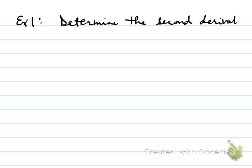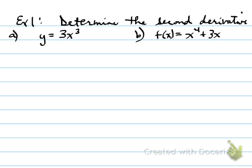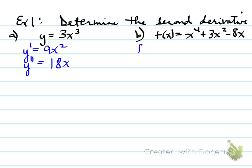In example one, you're asked to determine the second derivative. For part a, to find the second derivative you have to do the first derivative first. So the first derivative is going to be 9x squared. You take the second derivative by doing the derivative of the first derivative, which is 18x.